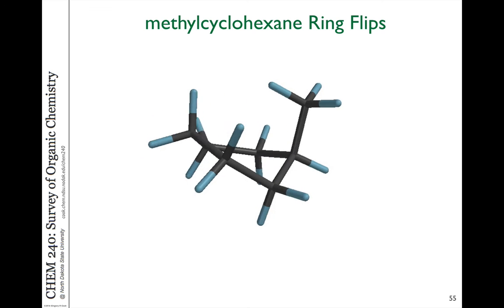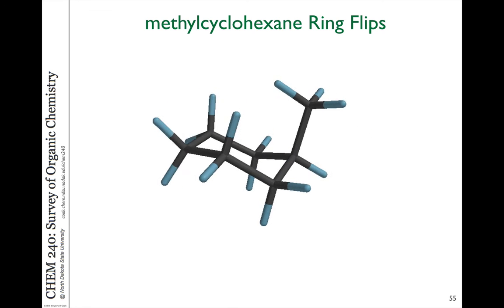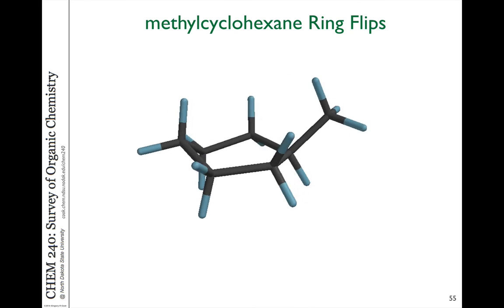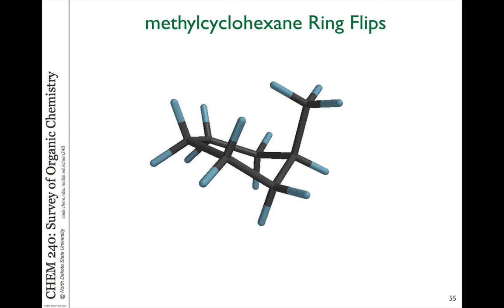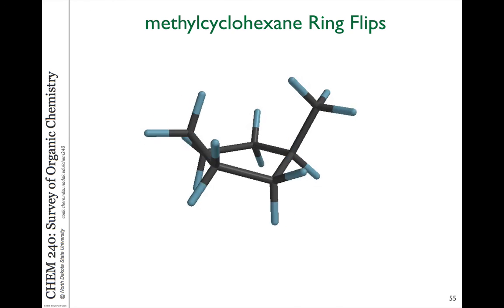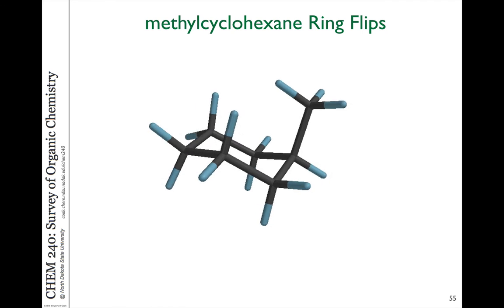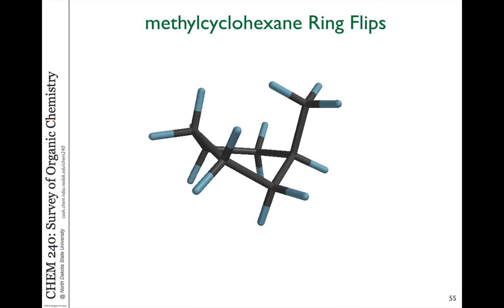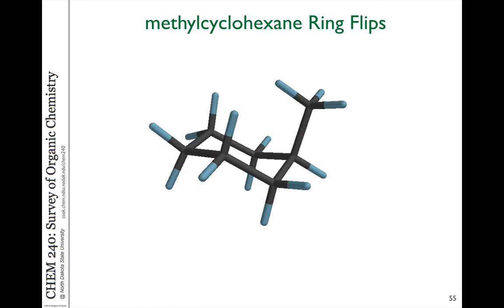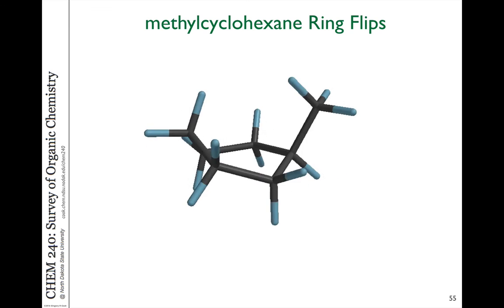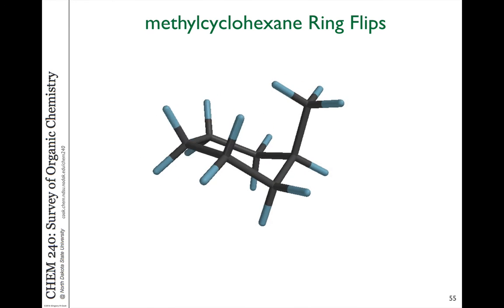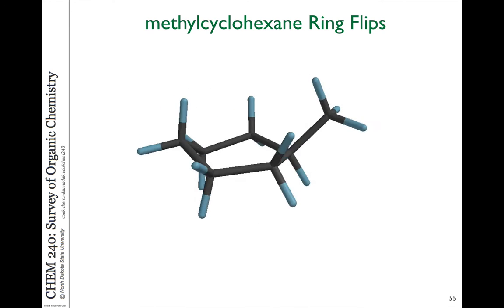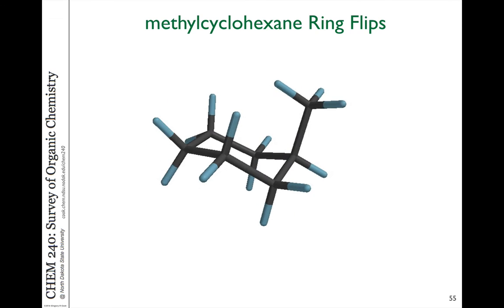In the next video we're going to talk about a different kind of isomerism — stereoisomers of molecules. When we have restricted rotation due to the ring, we can have groups which are attached in exactly the same places but on opposite sides of the ring, and those are different molecules. We'll see how that affects conformations in the next video.